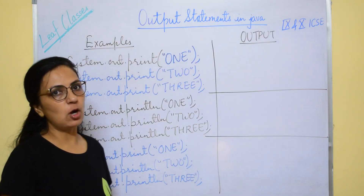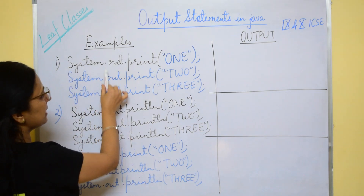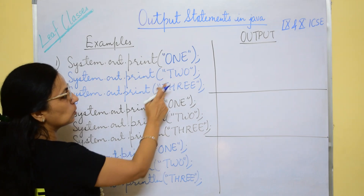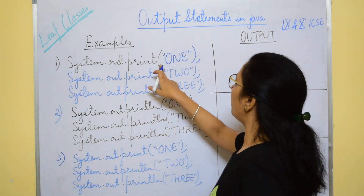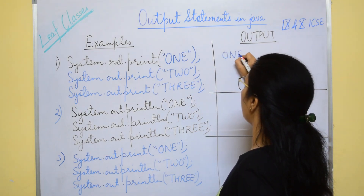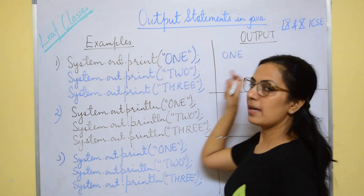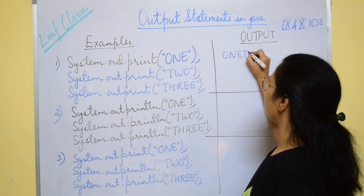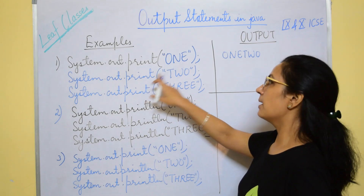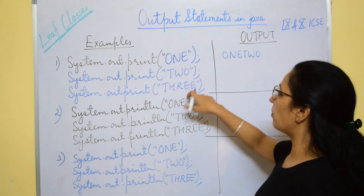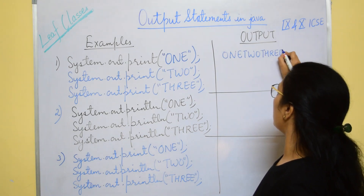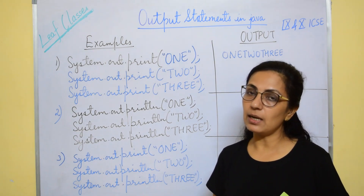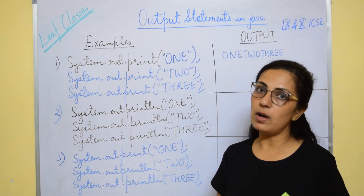Let's do some examples. In the first example we have three statements all using print: System.out.print("1"), System.out.print("2"), System.out.print("3"). The output will be 1, 2, 3 all on the same line because print keeps the cursor on the same line. Note that any message within double quotes is displayed exactly as written — if it is in capital it displays in capital, if in small it displays in small.